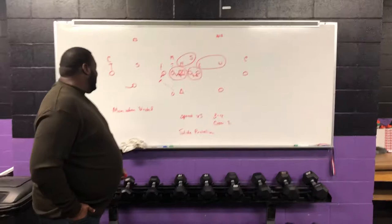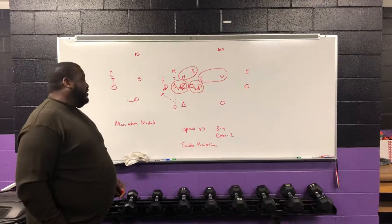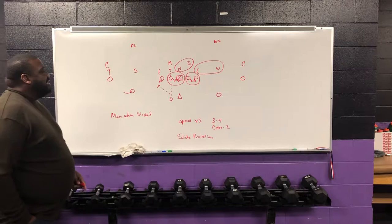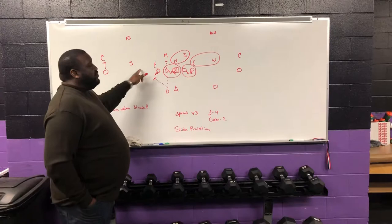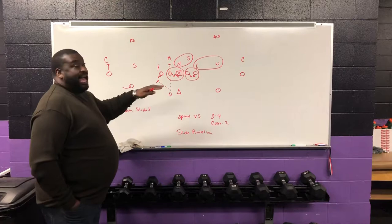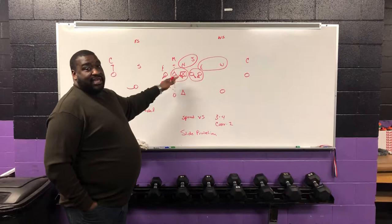A couple days ago we did a spread offense versus a 4-2-5. Today we're going to do a spread offense versus a 3-4 with a cover two on the back side. A lot of guys use a 3-4 when they think you're a pass heavy team — that gives them more options for blitz and coverage on the back side. Based on this, I actually like the slide protection better versus a 3-4 because you incorporate the front side guard in the slide.